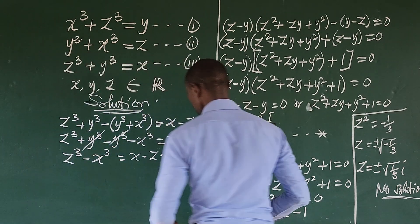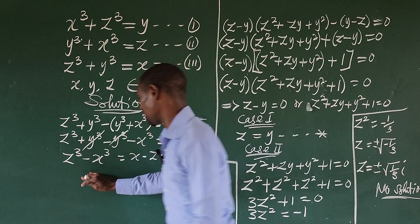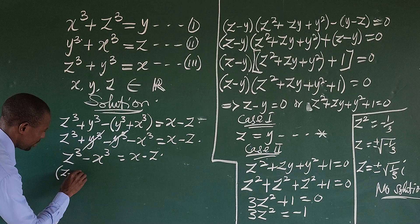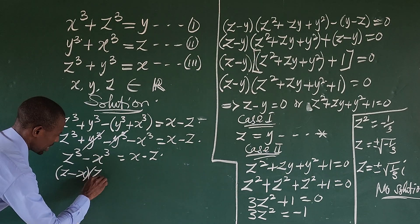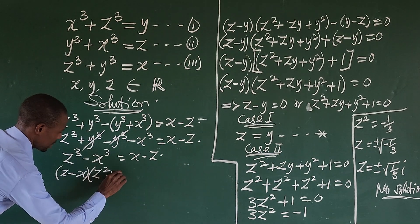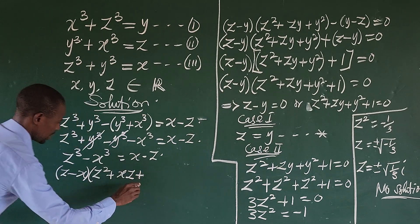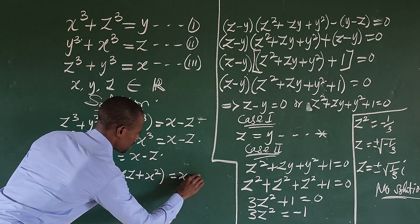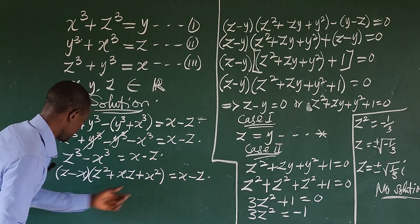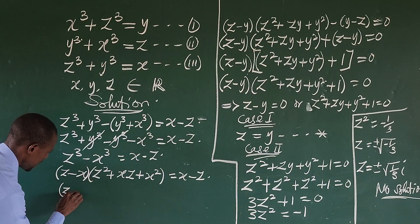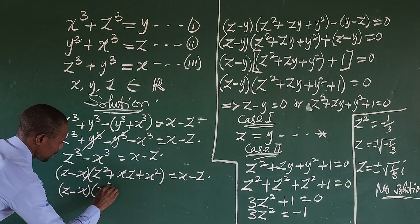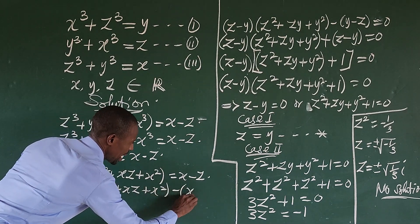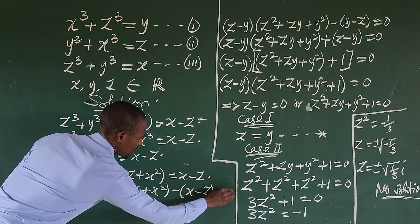Again we apply the difference of cubes identity to z³ − x³: (z − x)(z² + xz + x²) = x − z. Moving the right-hand side to the left: (z − x)(z² + xz + x²) − (x − z) = 0.